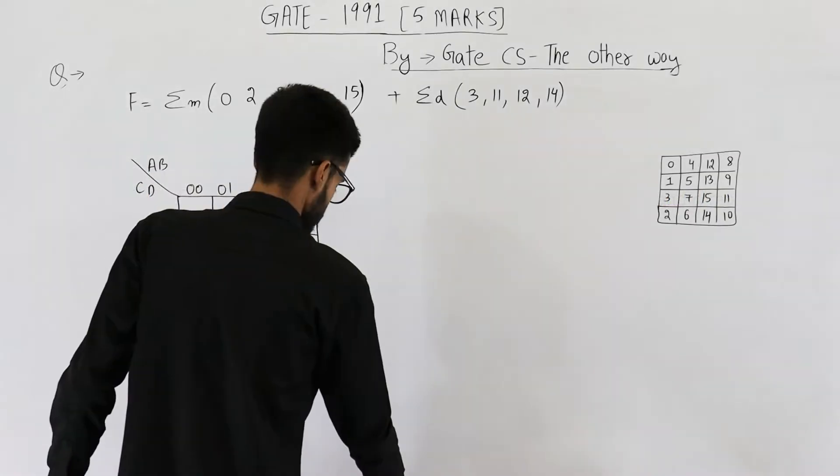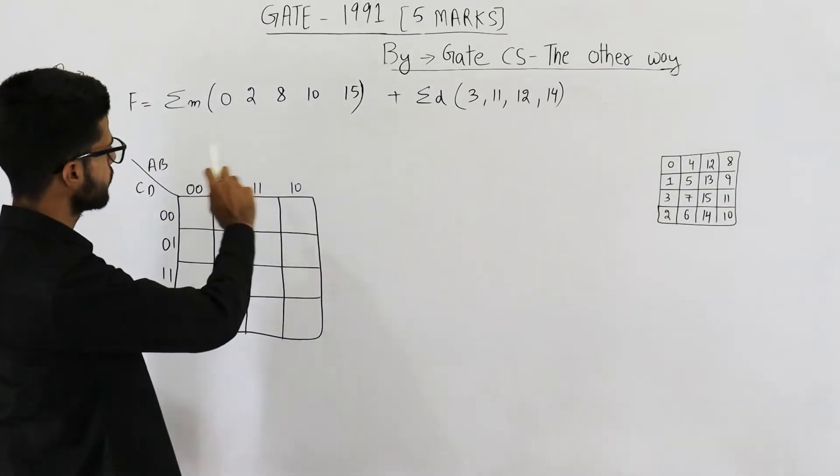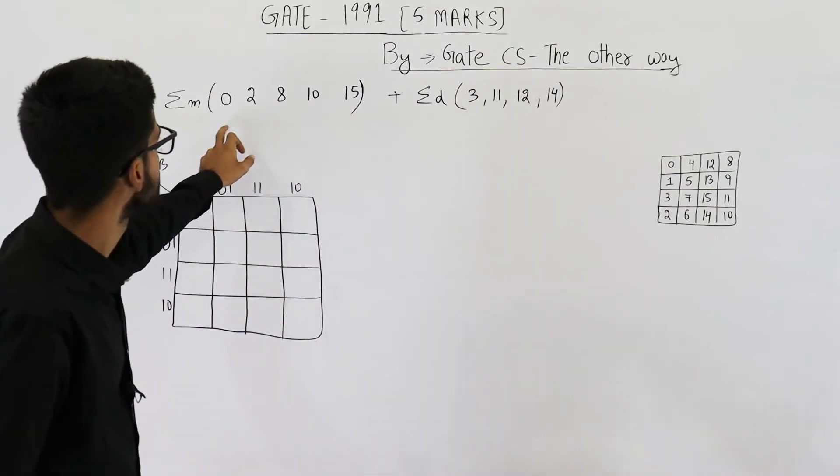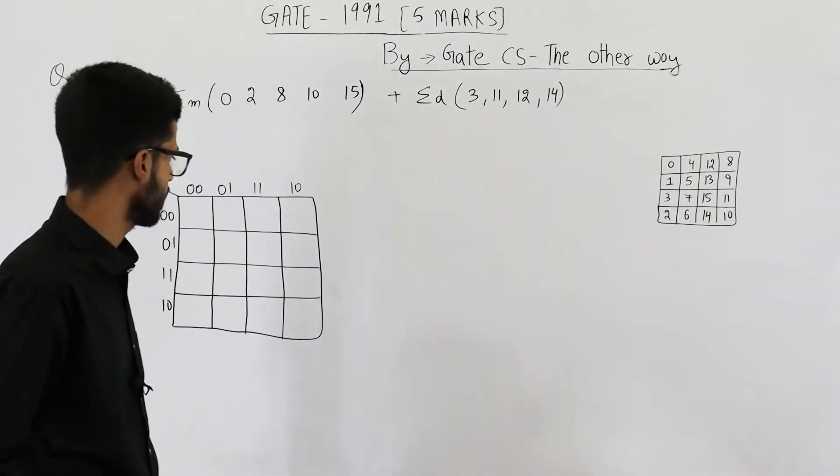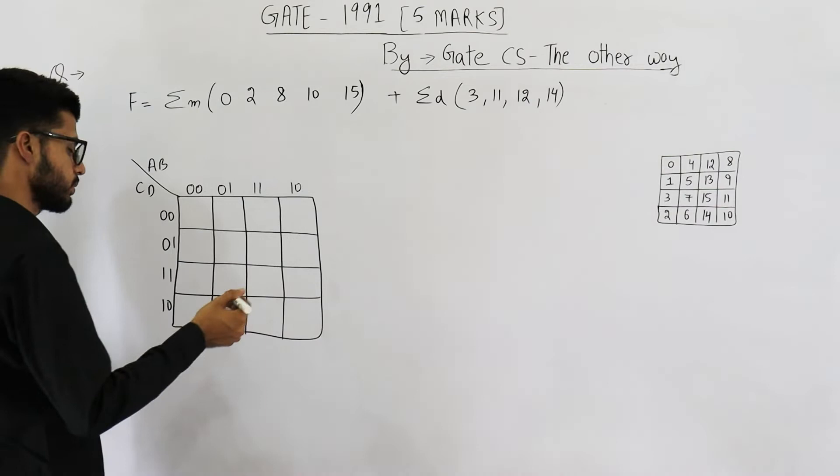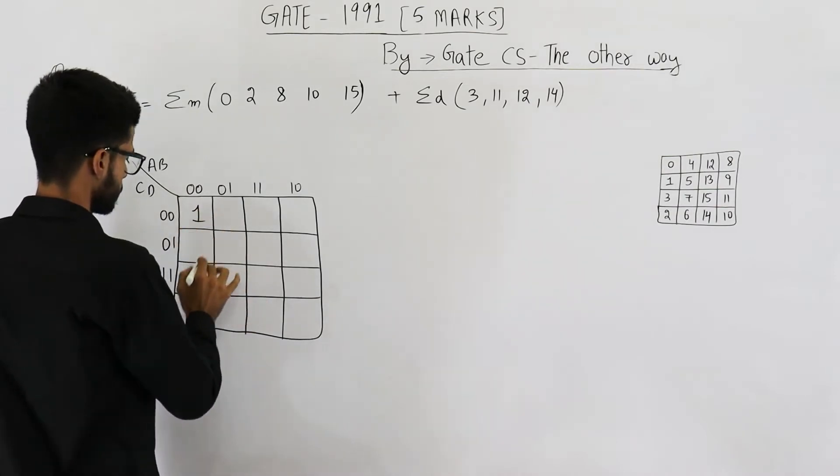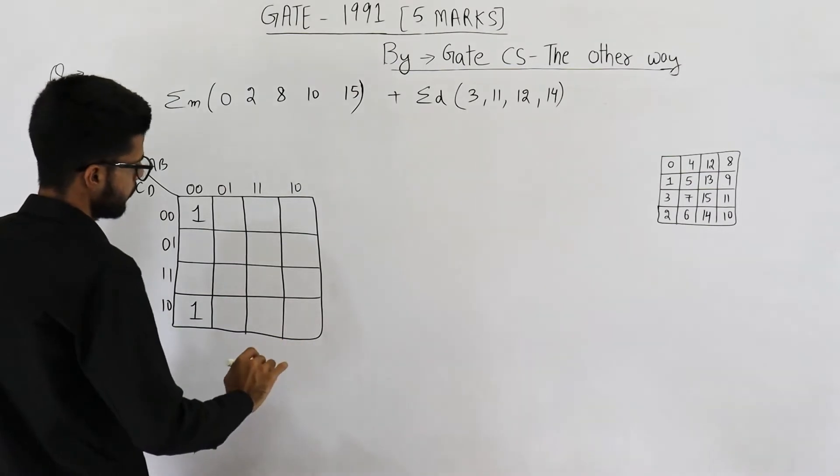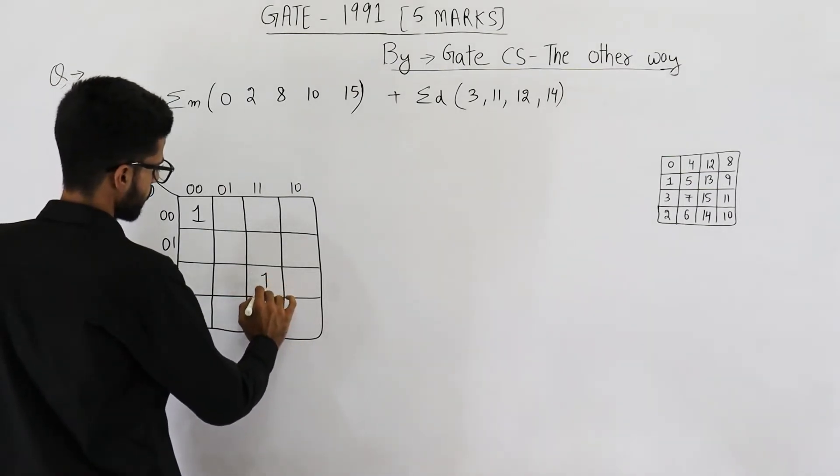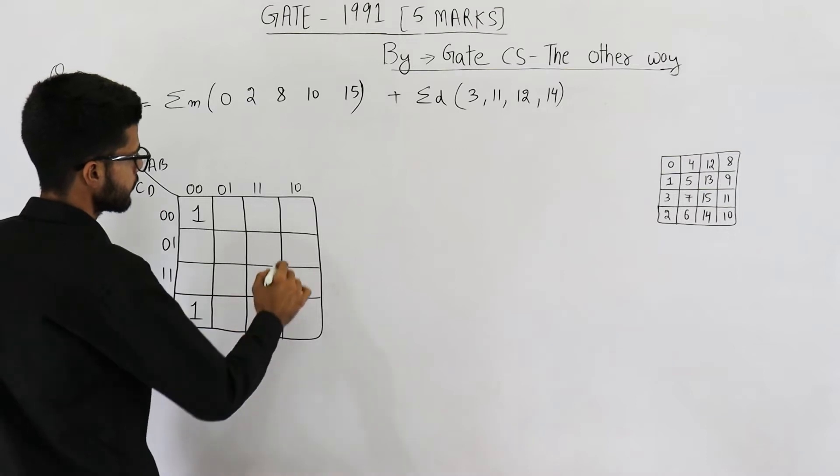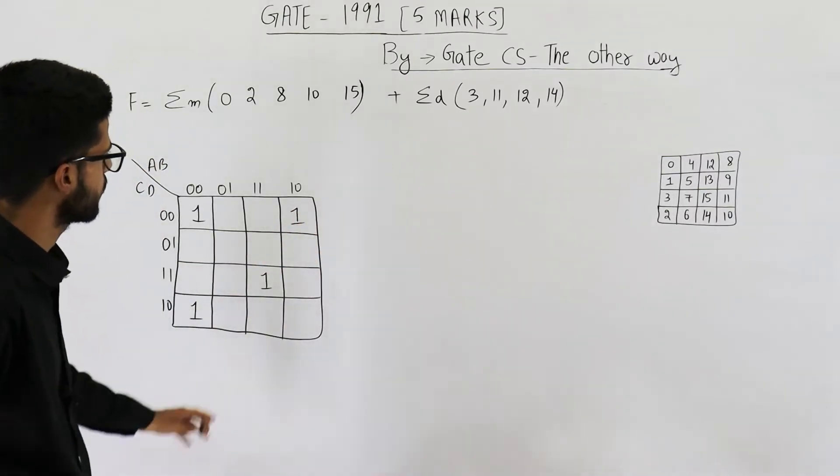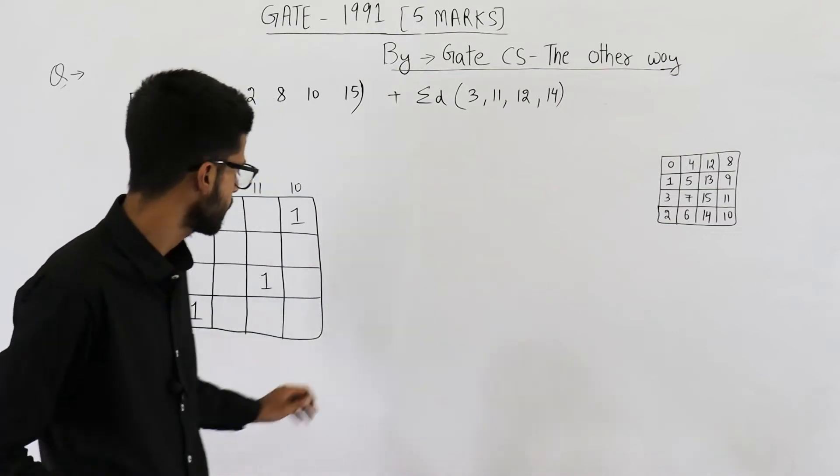The function given in the question has the minterms 0, 2, 8, 10 and 15. Let's write those: 0, 2, 10 and 15 is here. There's 8, 8 is here and which one is left, it's 10, 10 is here.